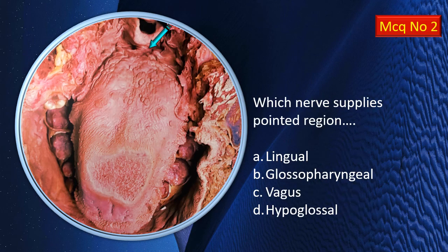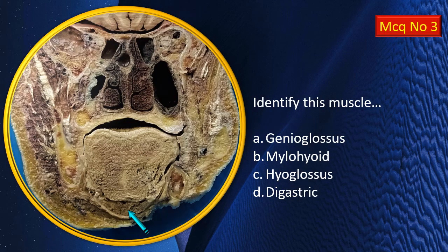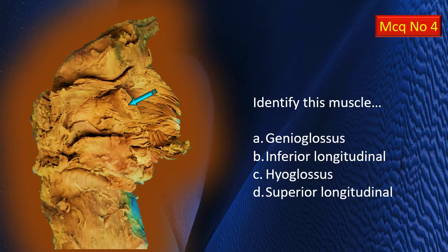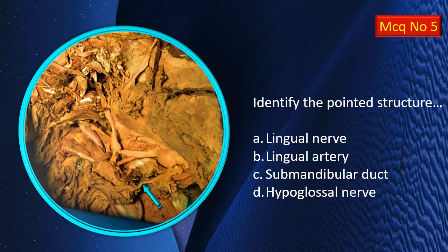MCQ 4: Identify this muscle from the tongue dissection shown earlier. MCQ 5 (the last MCQ): A blue structure is shown — is it a vein or an artery? Can you identify it? These are the set of five MCQs.